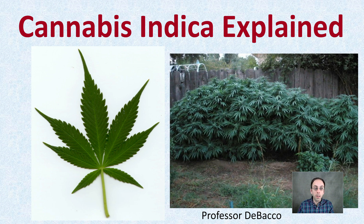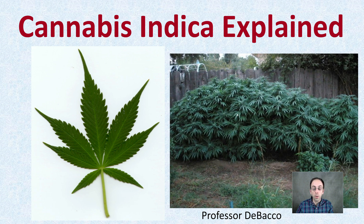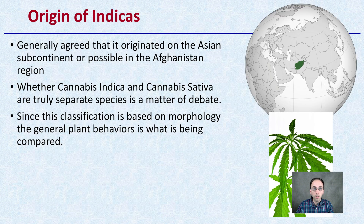Looking just at the image here, we can see that the leaf structure — the morphology — is really how we classify an indica versus sativa versus some of the others. This indica has a much shorter and wider leaf compared to sativas, which have a longer and thinner leaf style.